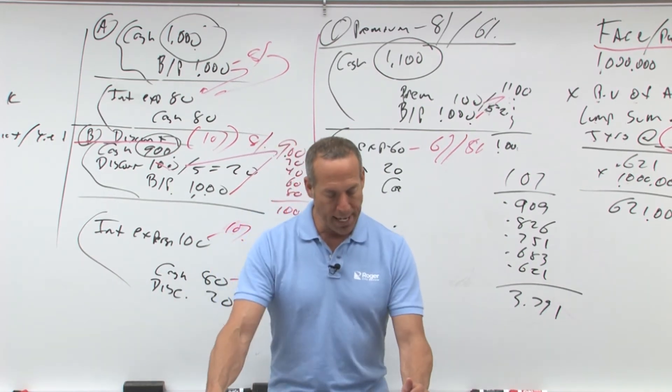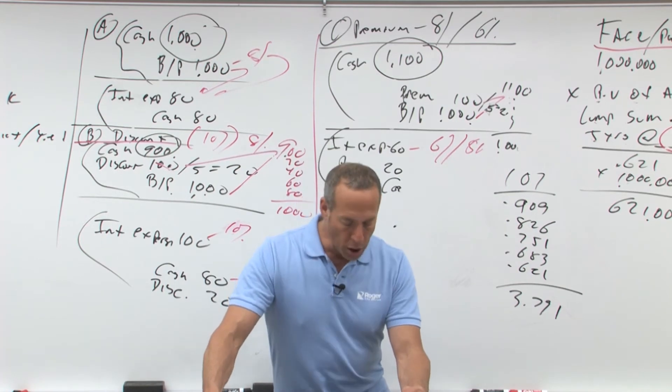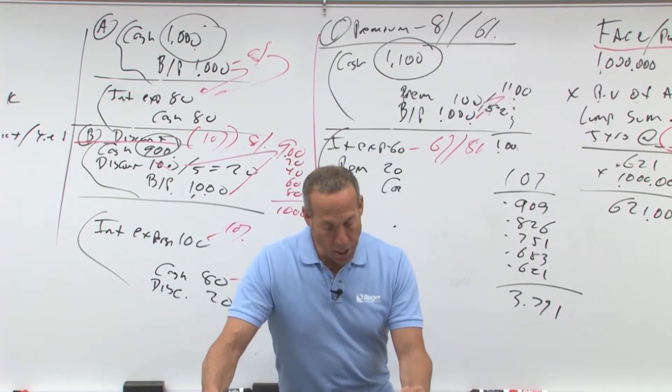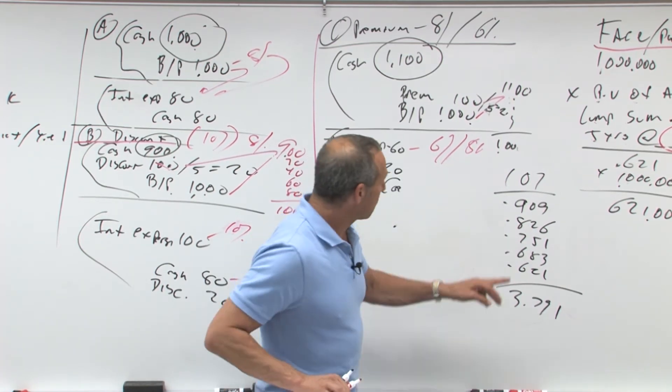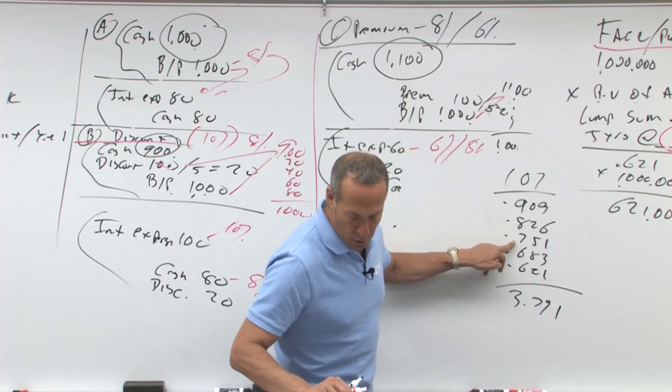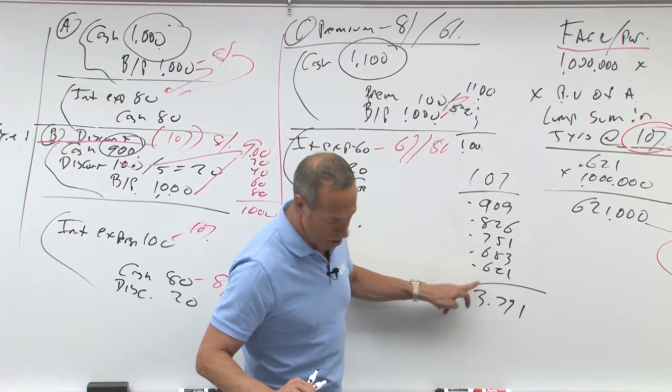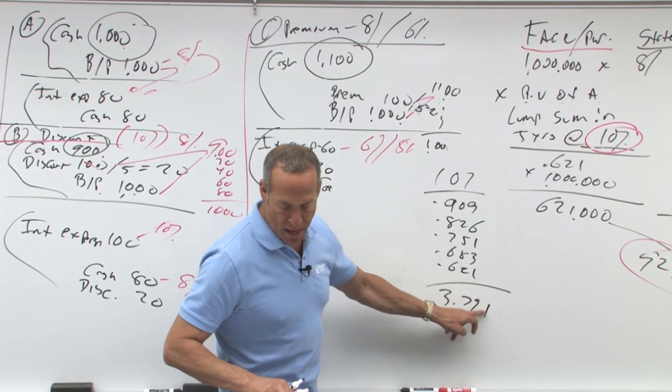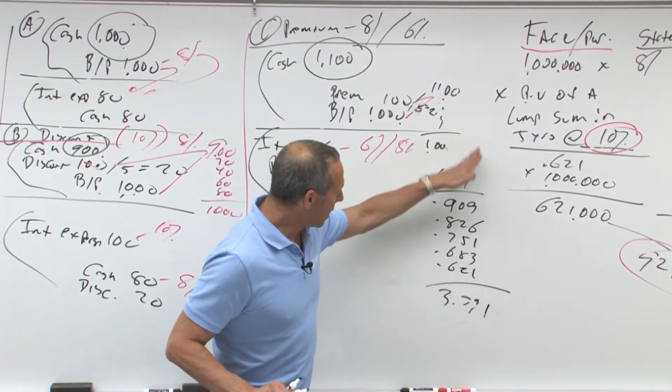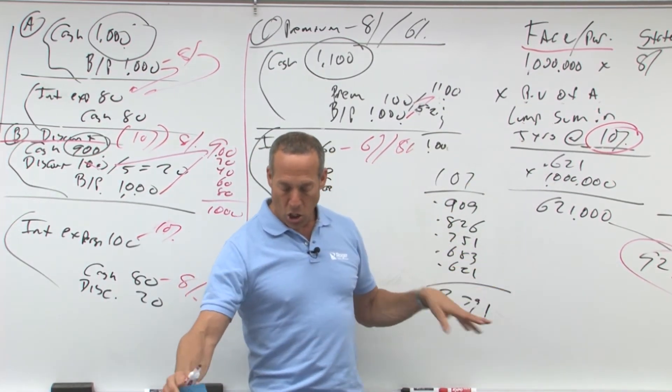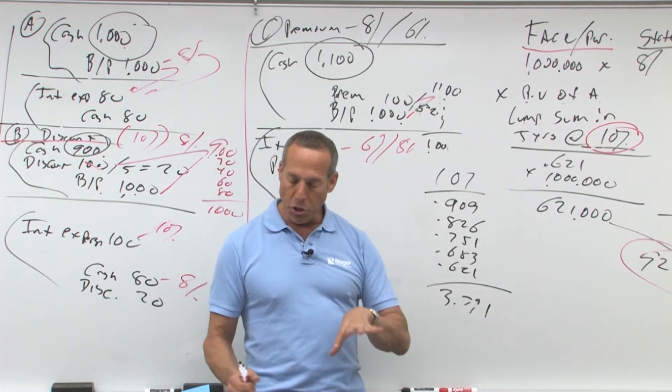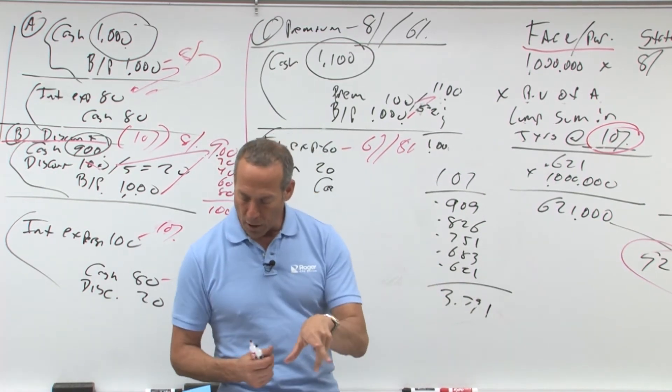Now you'll see on the next page here again is an example working on, and there's the factors. For one year, 0.91, 0.83, here's 0.91, 0.83, 0.75, 0.68, 0.62 is 3.79. That is the present value factor, that's an annuity, that is a lump sum, each of those. So as you look at that, you can see we're using the formula, we're coming up with the amounts.